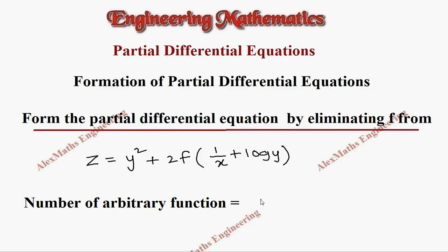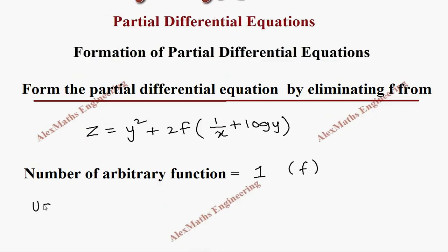The number of arbitrary function is 1 and that is f. We are going to use only the first order derivatives: ∂z/∂x which is named as p, and ∂z/∂y which is named as q.